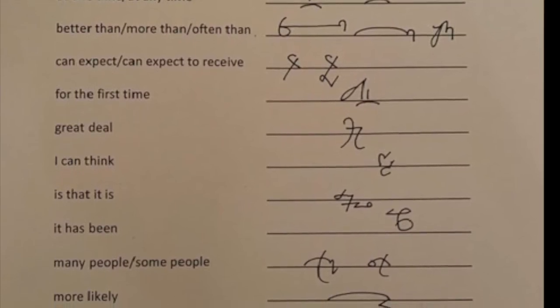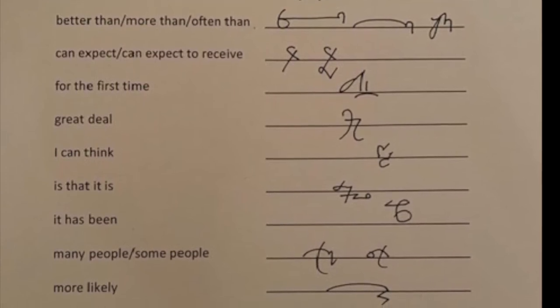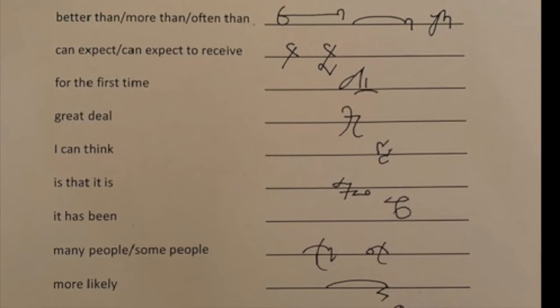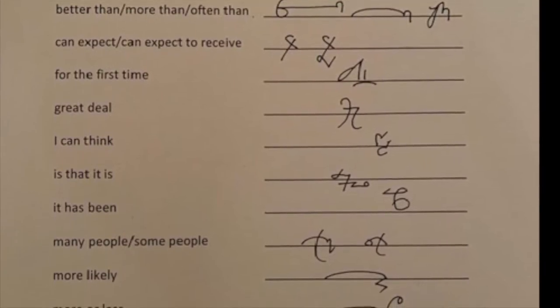you've got CAN EXPECT TO RECEIVE, missing out the word TO altogether, as we do in word groupings. It is possible to recognise them without the very minor words.